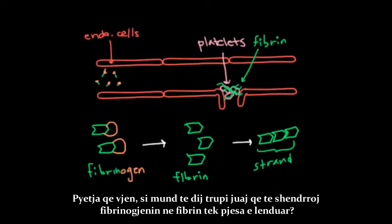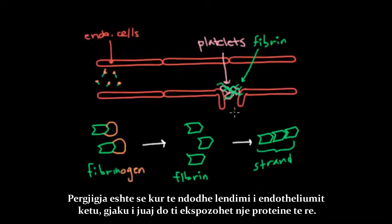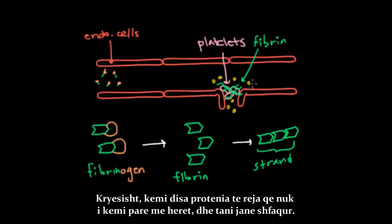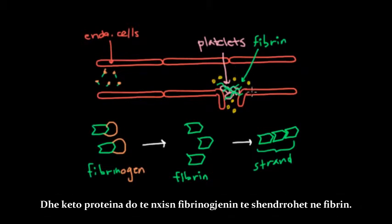So the question then becomes, how does your body know to convert fibrinogen into fibrin at the site of injury? And the answer is that when you injure your endothelium here, you're going to expose your blood to new proteins. And maybe your actual endothelial cells will release some proteins because they're damaged. So basically, you have new proteins that weren't seen before and that are seen now.